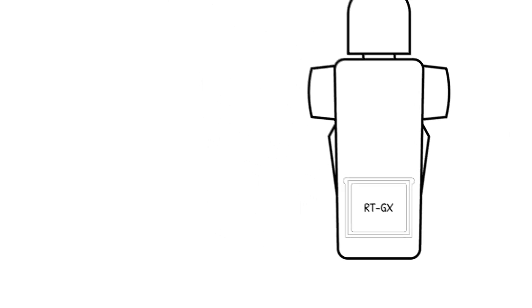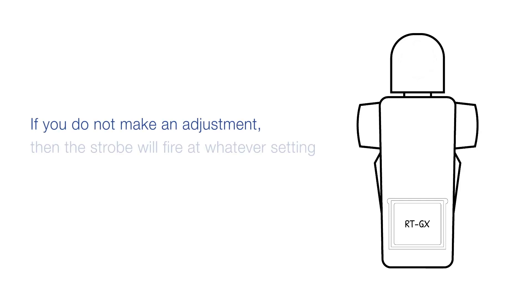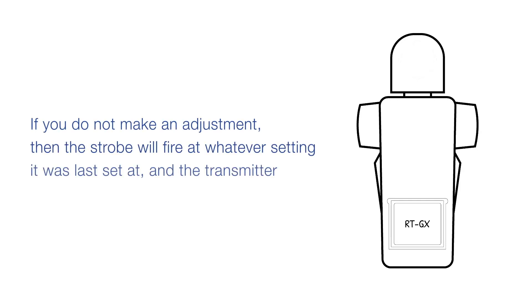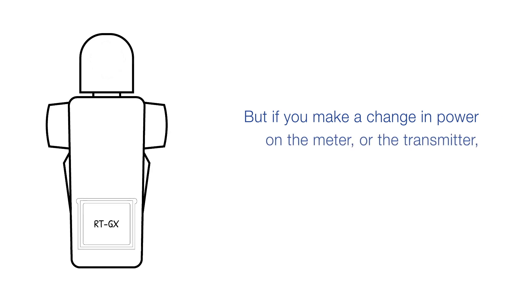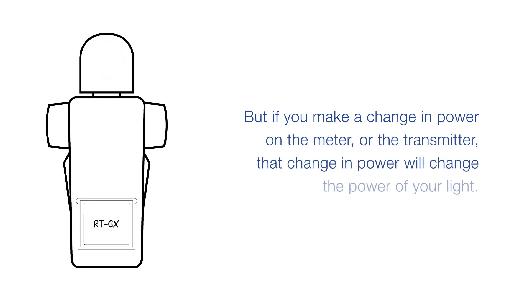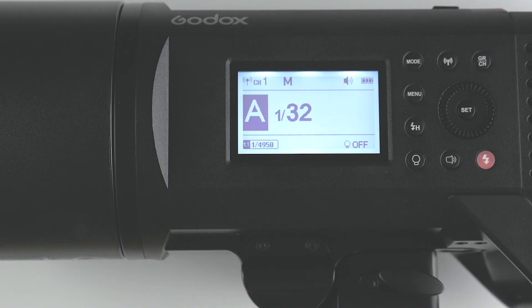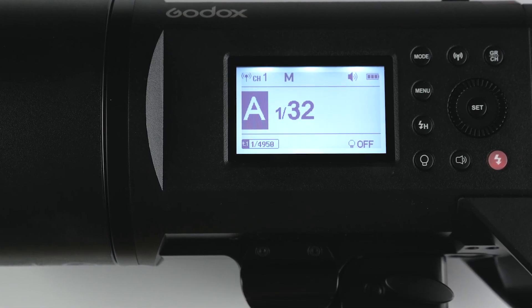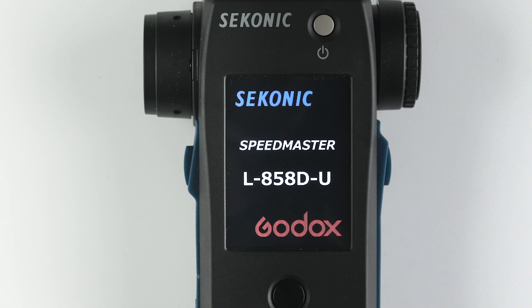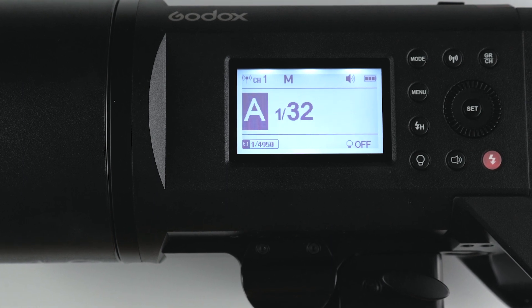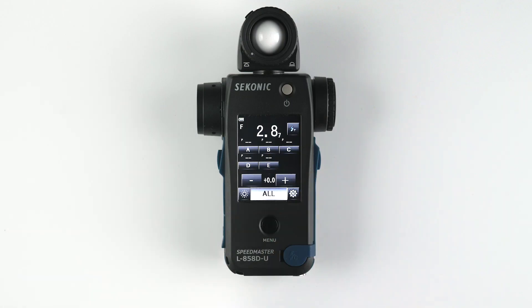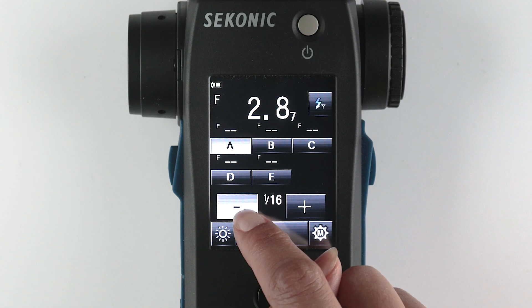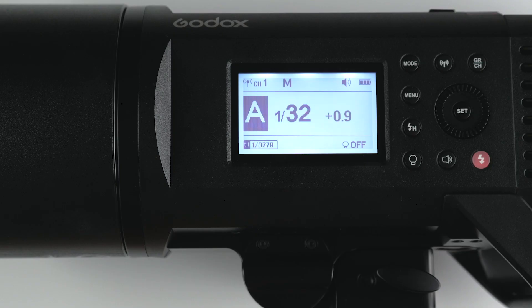The transmitter, whether it is in our meter or on your camera, works two different ways. If you do not make an adjustment, the strobe will fire at whatever setting it was last set at and the transmitter will simply send a fire signal. But if you make a change in power on the meter or the transmitter, that change in power will change the power of your light. For example, if your light is set to 1/32nd power and you power on your meter and fire the light from the meter, it will stay at 1/32nd power. If you go to the power control screen and change the power of a single group or all your lights together, the power of your lights will be reset to the power shown on the L858D display.